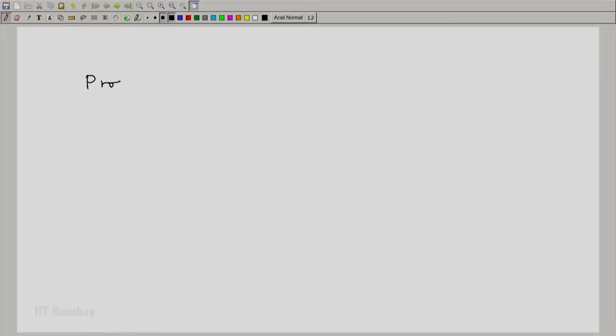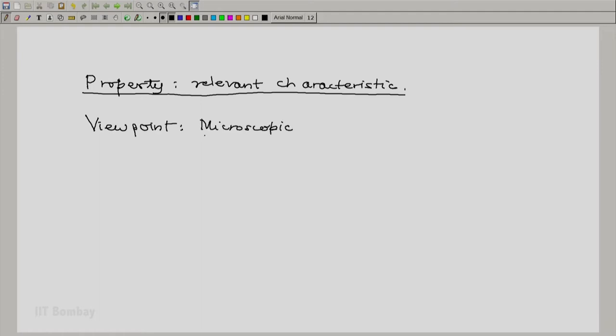Let us consider different ways to describe a system because each property is a relevant characteristic which describes a system. But the way we describe a system depends on the approach we have. For example, our viewpoint or our approach could be microscopic as against macroscopic.